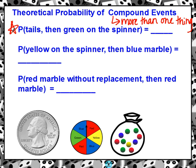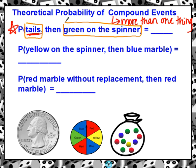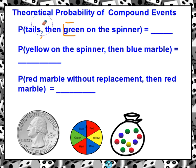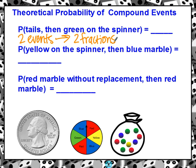So let's look at this first one right here. This says the probability of the coin landing on tails, then green on the spinner. If you think about how many events are happening — we have the coin landing on tails, then green on the spinner — that would be two events. Two events means two fractions. If there were three events, we would need three fractions; if there were four events, we would need four fractions. So two events means two fractions, and we're going to make sure that we have two fractions to work with.